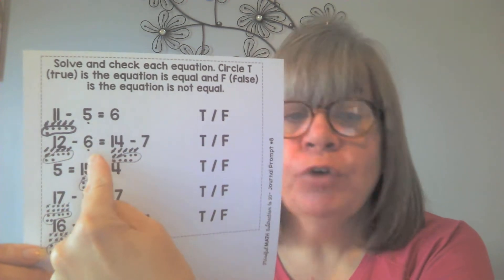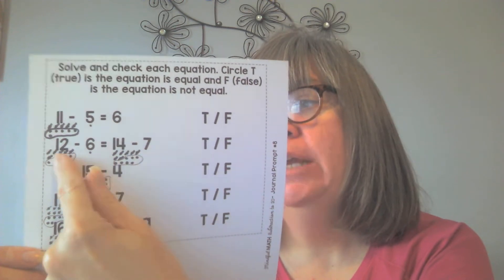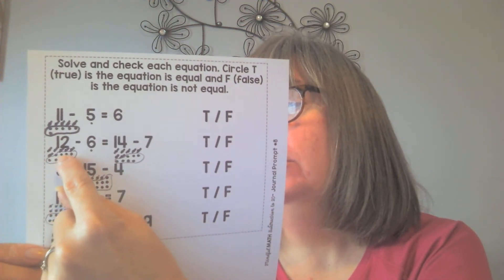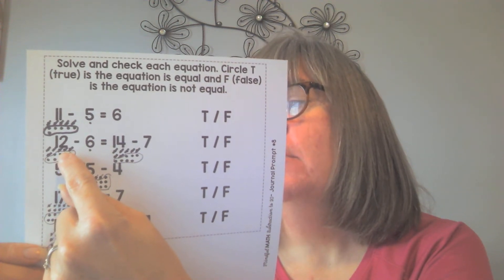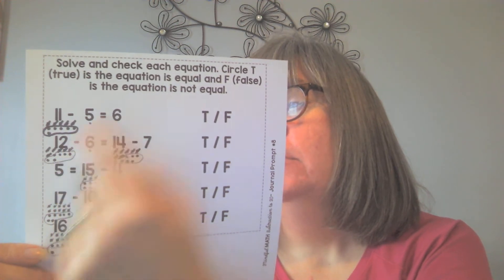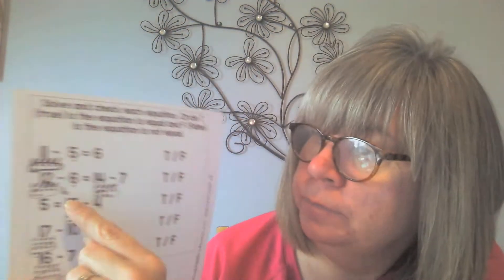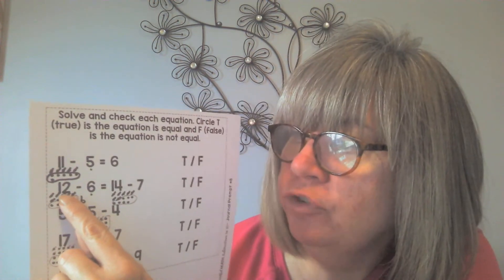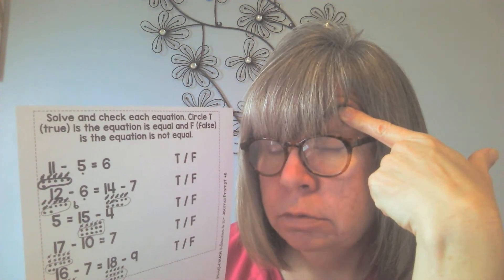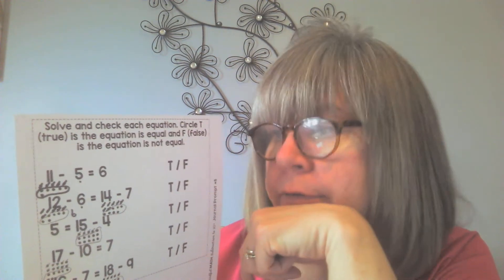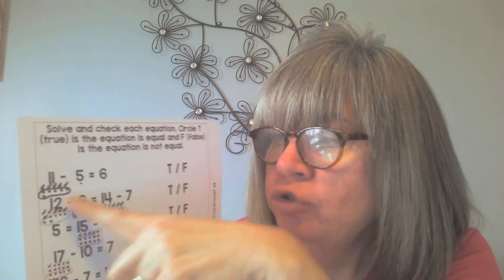You have to do 12 take away 6. Mrs. Card drew 12 dots and crossed off 6 of them — I can see 6 are left, so I'll write that underneath. 12 take away 6 equals 6. I knew that fast because of the double in the 12 family: 6 plus 6 is 12, so they're related facts.